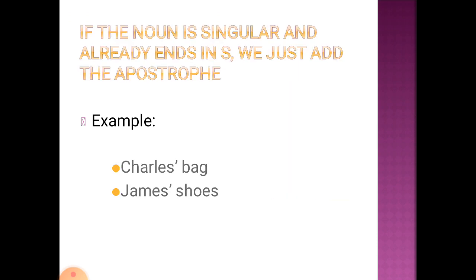If the noun is singular and already ends in s — for example, Charles or James — since the names end with the letter s, we just add an apostrophe after the s. For example: Charles' back, James' shoes.